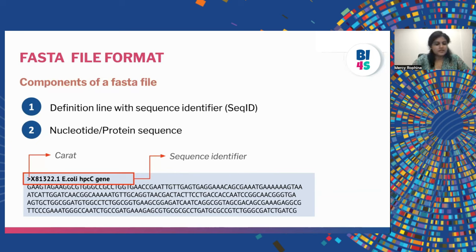Coming to the end of this lecture, let us take a quick recap. First, we talked about the FASTA file, which has two major sections: a header or sequence identifier line, followed by a sequence. FASTA files are stored with the extension .fa or .fasta. Next, we saw the FASTQ file, which has three major components: the header or sequence identifier, the sequence, and the quality score corresponding to that sequence. FASTQ files are stored with the extension .fq or .fastq. With this, we come to an end of this lecture. In this lecture, we covered two major file formats useful in bioinformatics — their components, how they look, and how to interpret them. Thank you.